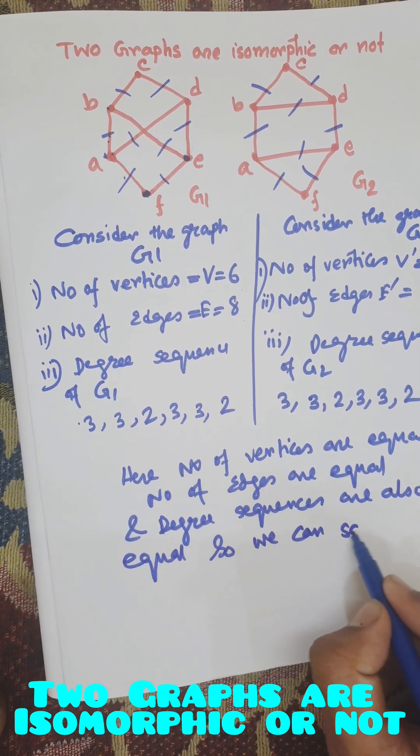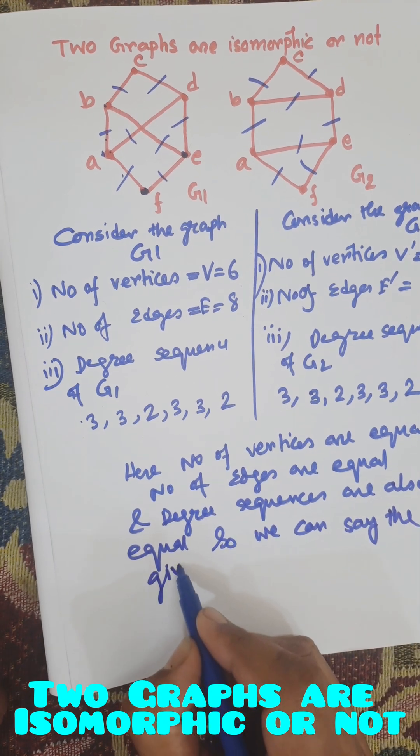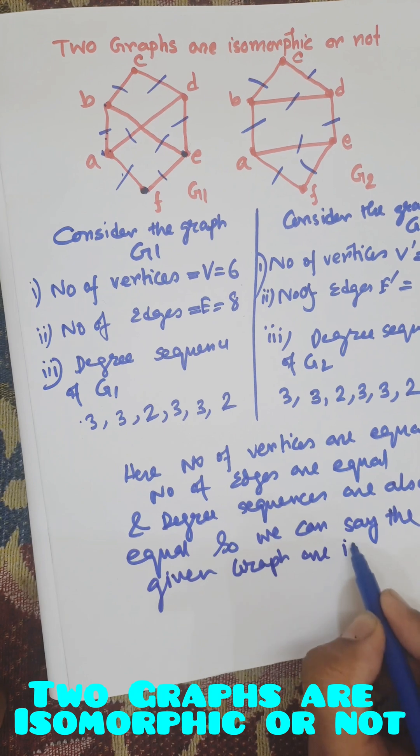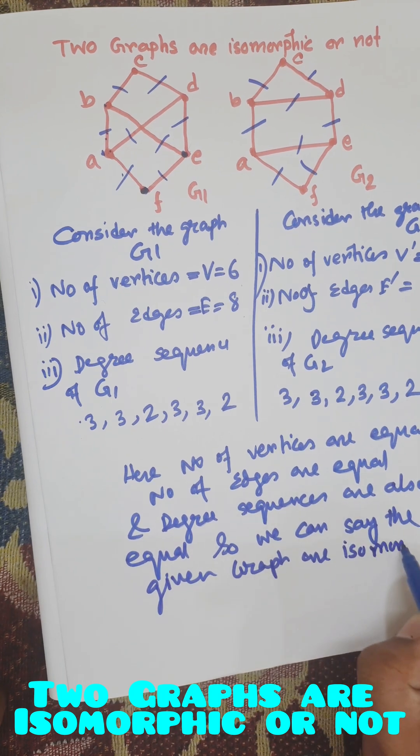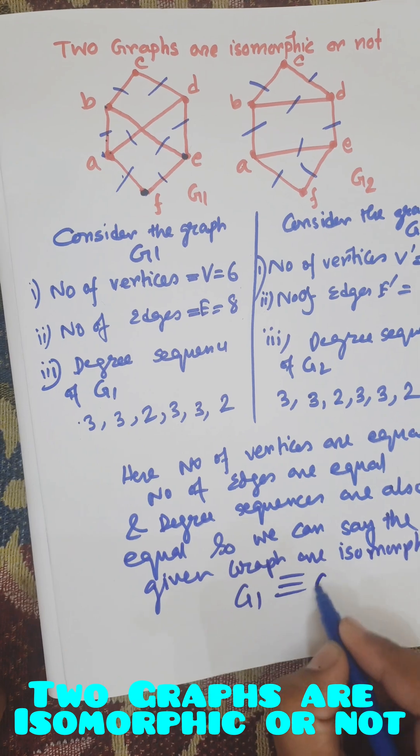So we can say the given graphs are isomorphic. That is G1 equivalent to G2.